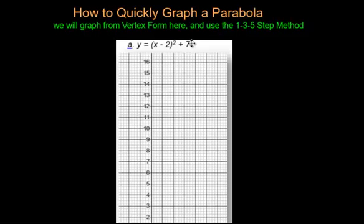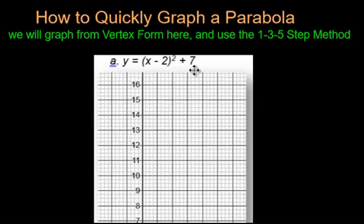Vertex form is this form right here, where you have something, often in brackets - something x minus or x plus something in brackets squared, and then a plus or a minus on the end. This vertex form from previous videos quickly tells you where the vertex is. Surprise, surprise, it's called vertex form.